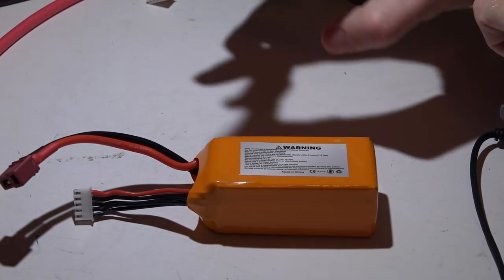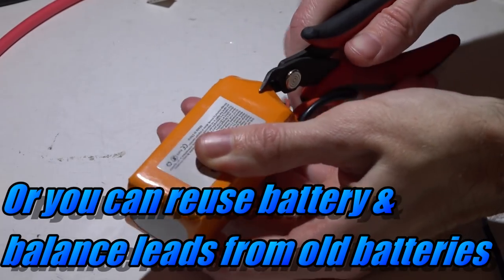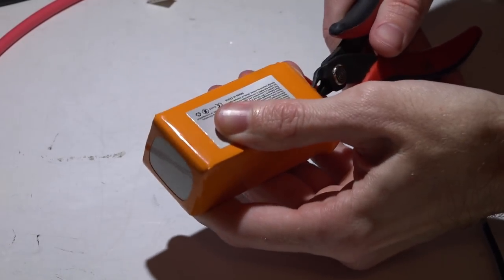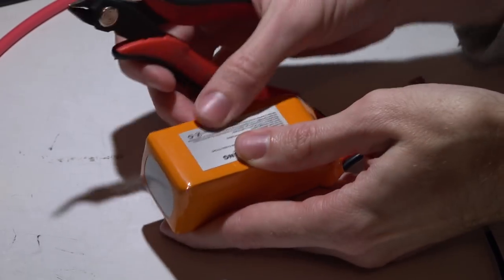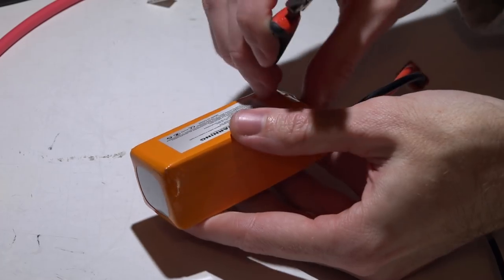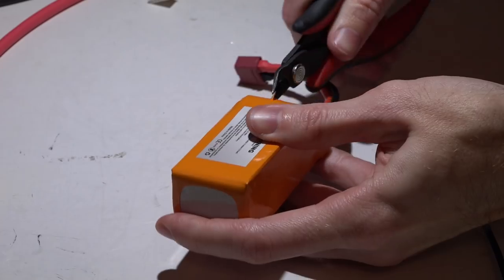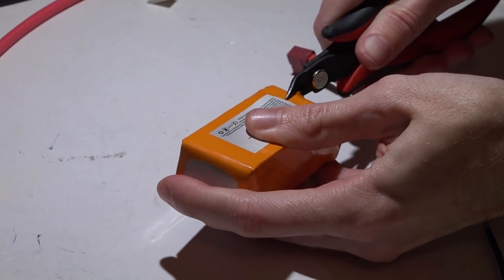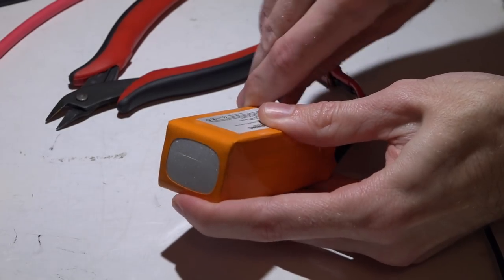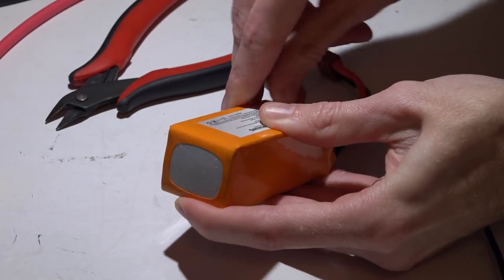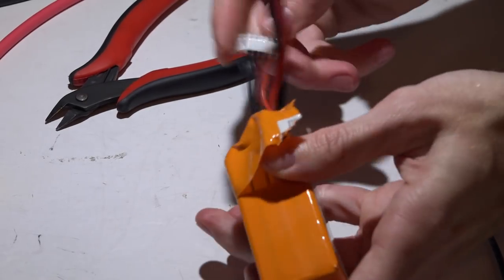All the parts I'm using I will leave links to in the description below. First, I'm going to take this heat shrink off. I really don't like this heat shrink anyway - one, because it's really slick, and two, it doesn't really provide any protection. At the end of this video when I put new heat shrink on, I'll give you the size that I'm using and the type. I like that stuff a lot better. In fact, I always change the heat shrink out as soon as I get batteries, even if they do have the right connector on it.